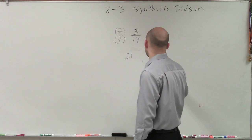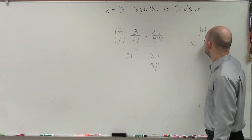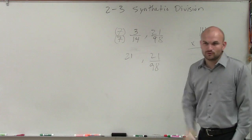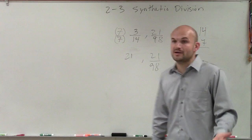Then we have 21 over 98. Now the question is, is seven times 14 equal to 98? If it is, we have equivalent ratios. If it is not, we do not have equivalent ratios.